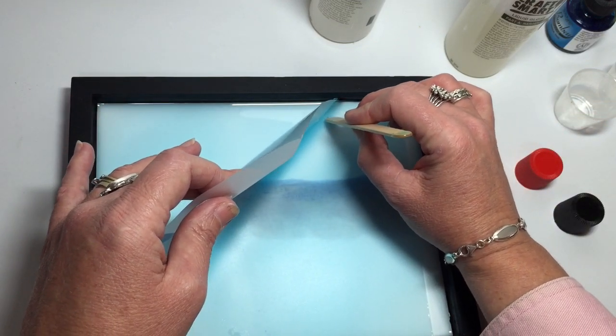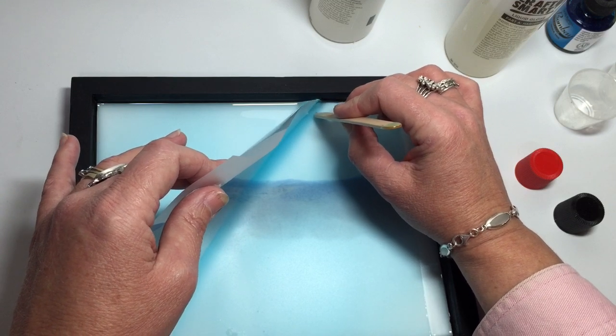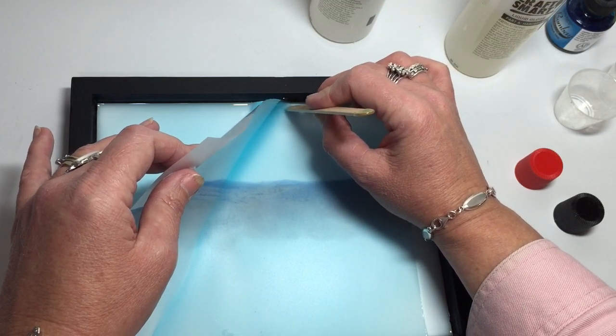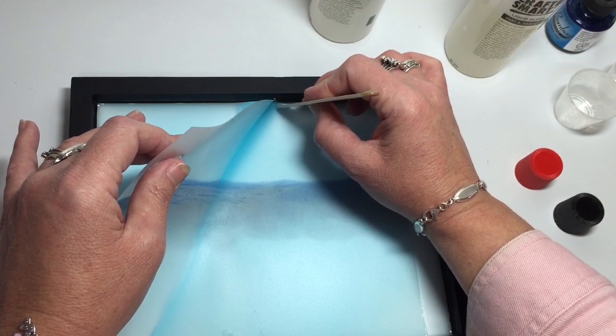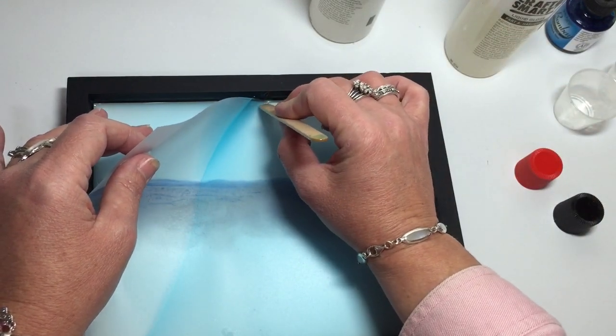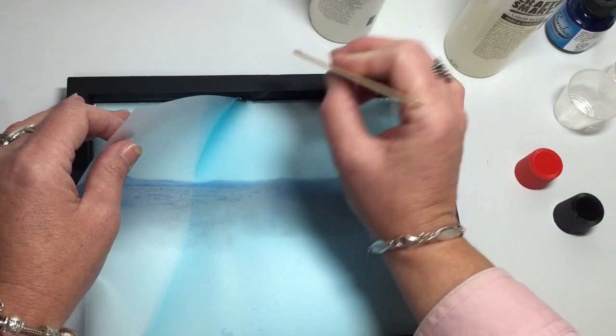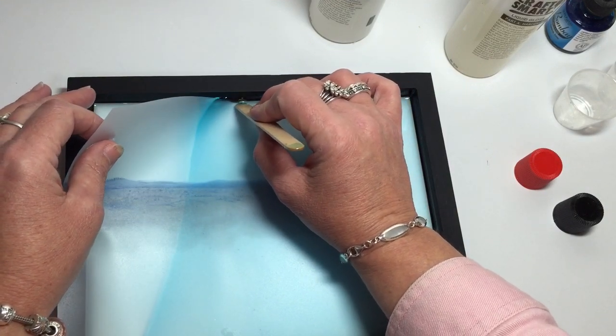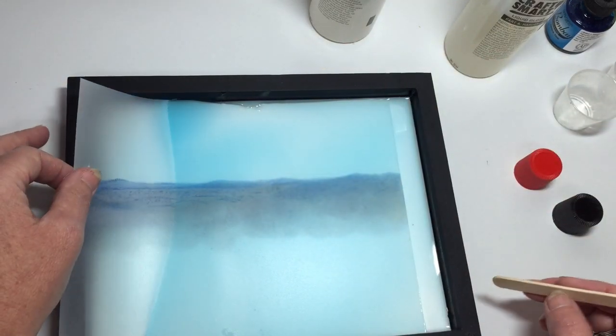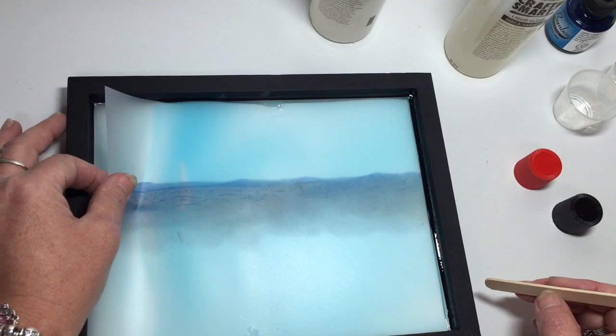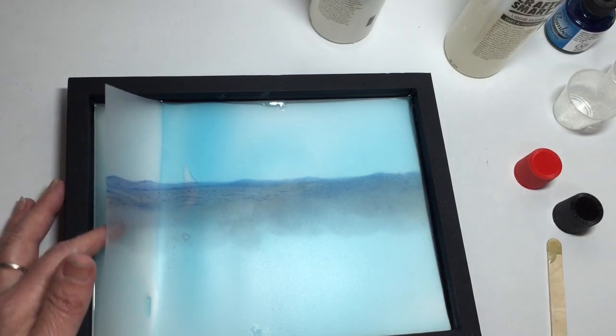And that is the trickiest part of working with the resin is minimizing the bubbles. So if you do get one, just nudge it to the edge and eventually they can usually be coaxed out. This one's proving to be a particularly stubborn one. It doesn't matter if there's a bit of resin on top of the film because in the next layer I will be covering that drafting film anyway.